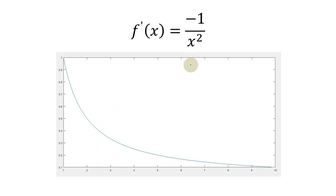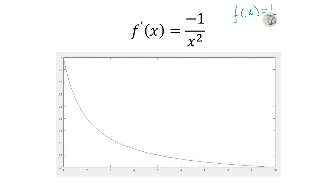Next we look at the graph. This is the graph of f(x) = 1 over x. The slope at any point will be minus 1 over x squared, which is the derivative. Here is a point on the graph of f(x), and this will be the slope, shown by the angle theta.